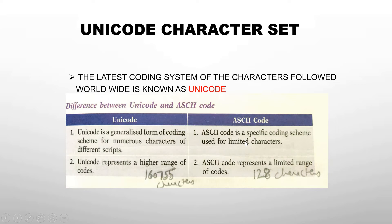ASCII code is limited — it can assign codes for only 128 characters. In Java, we prefer Unicode over ASCII because Unicode is used for coding numerous characters from different scripts, supporting many languages used on computer systems. Unicode can provide codes for up to 1,60,755 characters, giving it a higher range. Unicode includes ASCII, so it has a larger range than ASCII.